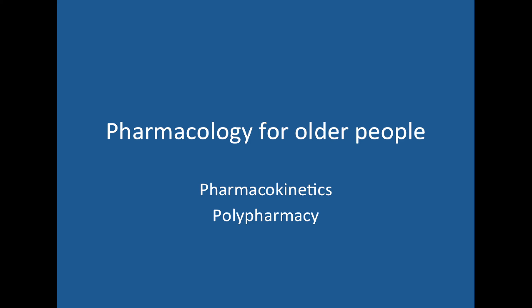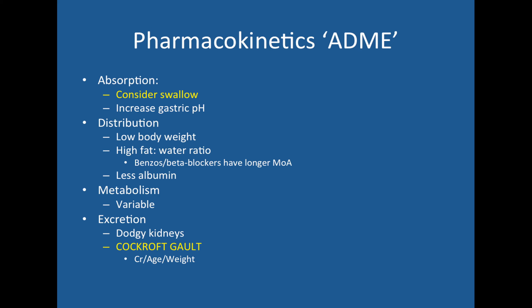Let's talk about pharmacology. In terms of pharmacokinetics — absorption, distribution, metabolism and excretion — in older people you need to consider their swallow when prescribing oral meds, whether due to stroke or end of life. Excretion is particularly important: older people tend to have reduced kidney function through diabetes or hypertension. When calculating their eGFR we use the Cockcroft-Gault formula, which takes into account creatinine, age, and weight — also important in children. This was a past question in either geriatrics or renal.